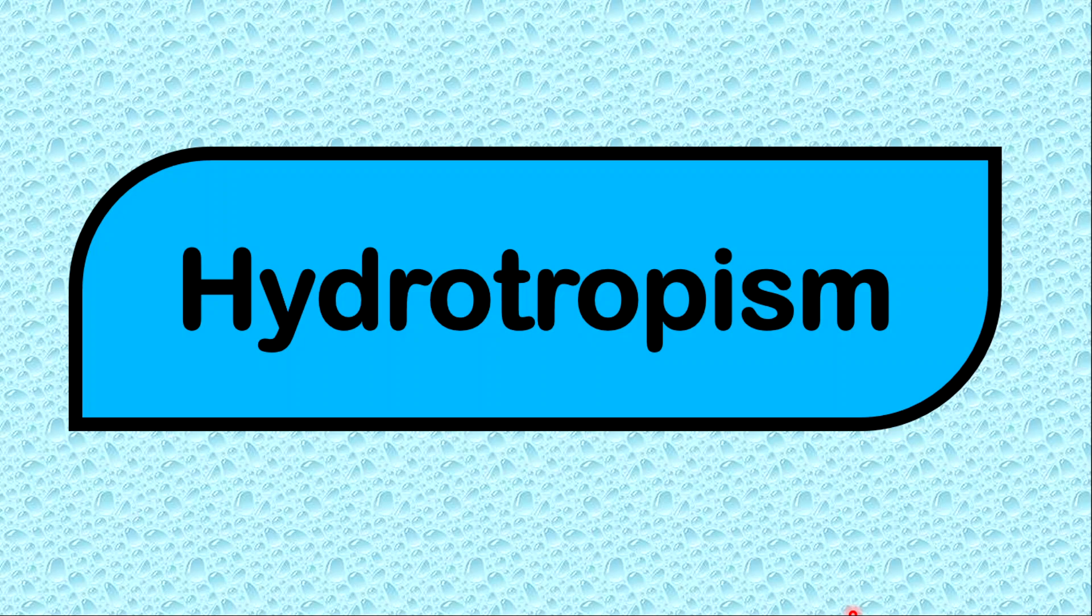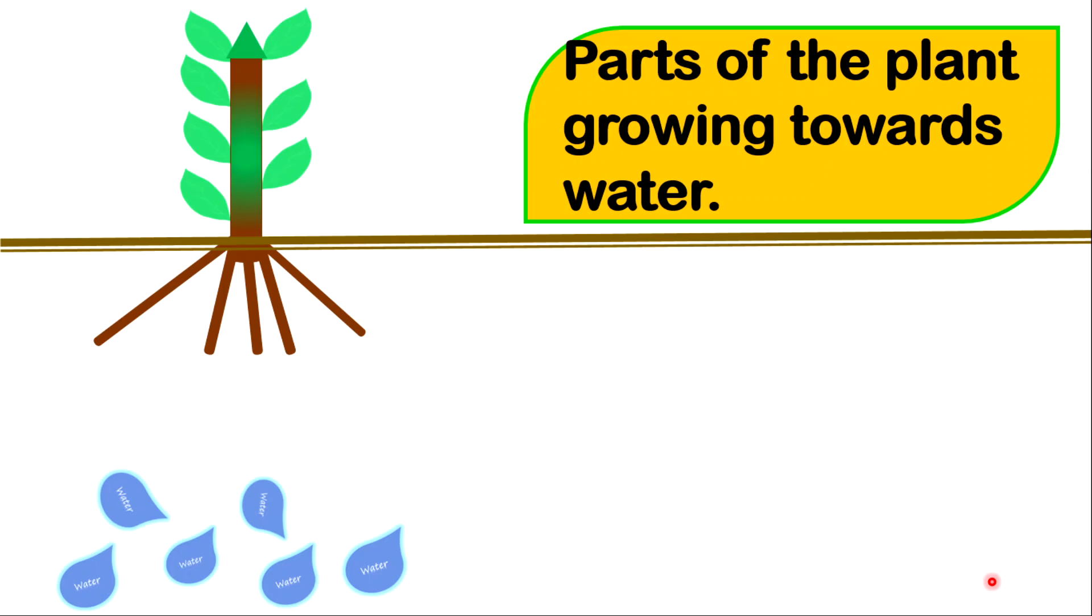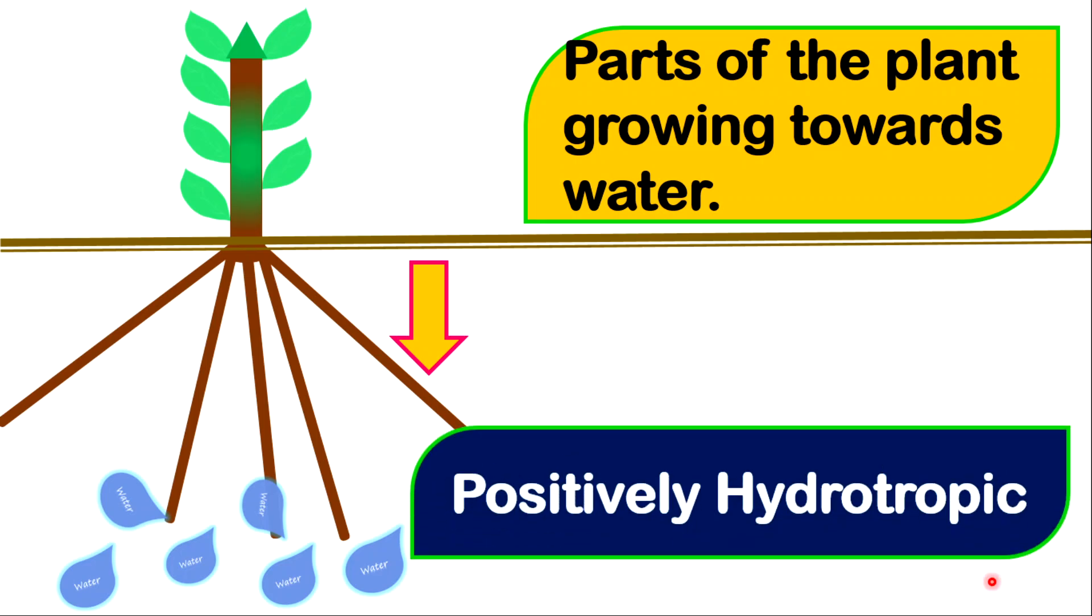Let's get into hydrotropism. Hydro is a response to water. As the part suggests, hydro refers to water, so roots will go towards water. In some other plants, parts of those plants will go towards water as well. But typically, roots will grow towards water, so the roots will extend. Based on this, we can conclude that roots are positively hydrotropic.